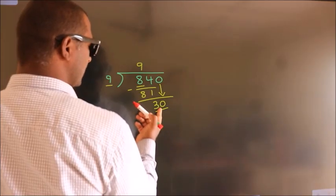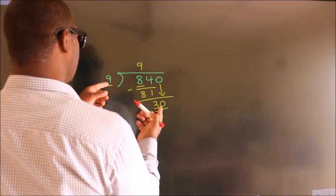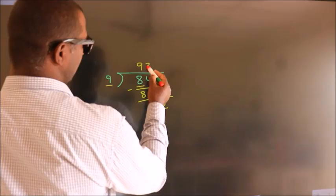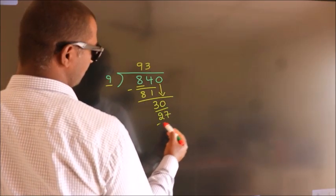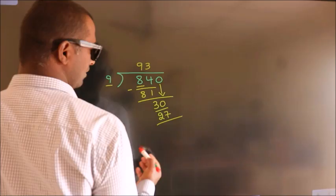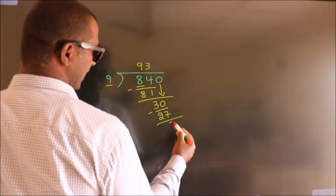A number close to 30 in the 9 table is 9 times 3 equals 27. Now we subtract and get 3.